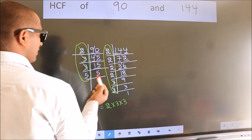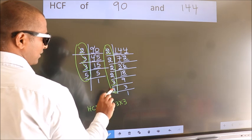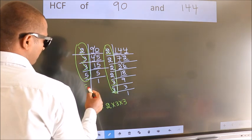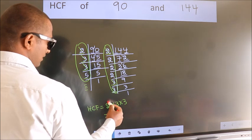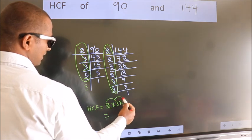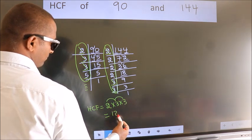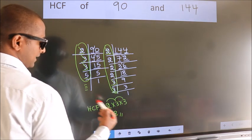Next number 5. Do we have 5 here? No. No more numbers have been left out. So our HCF is 2 into 3, 6 into 3, 18 is our HCF.